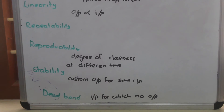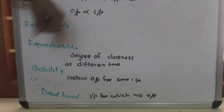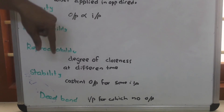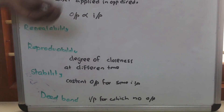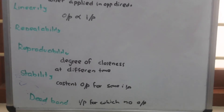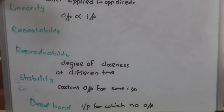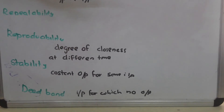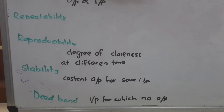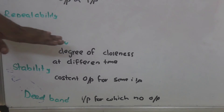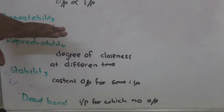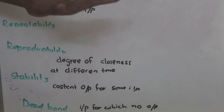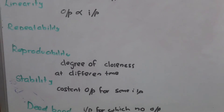Reproducibility means we are conducting the experiment at different times. Suppose today we will come and we will give an input of 2A and we will get an output. Tomorrow we will come and give the same input but we will be getting another output. So the closeness of these measured values at different times can be called as reproducibility.